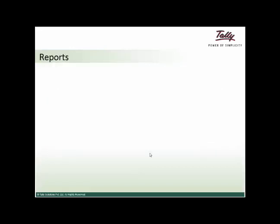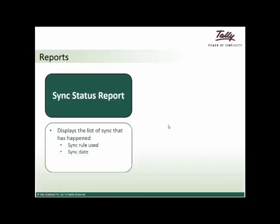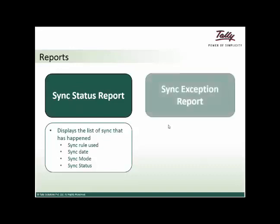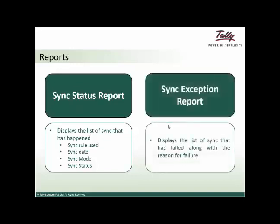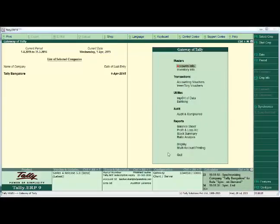Tally ERP 9 Release 5.0 brings along with it a couple of reports for data synchronization. This report shows the list of all data synchronized along with respective details: the sync rule used, whether it is master or transaction, the date on which sync happened, the mode of synchronization — whether online or on-demand — and the sync status. There is also a second report featuring the list of synchronization transactions that have failed along with the reason for failure. Let us see these reports in Tally ERP 9 Release 5.0.